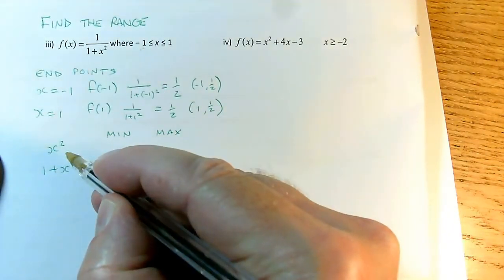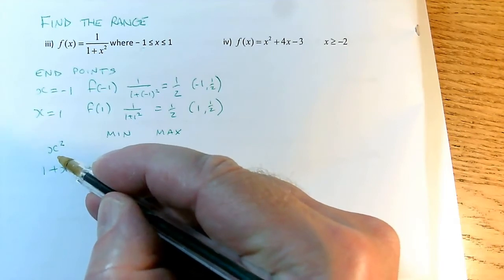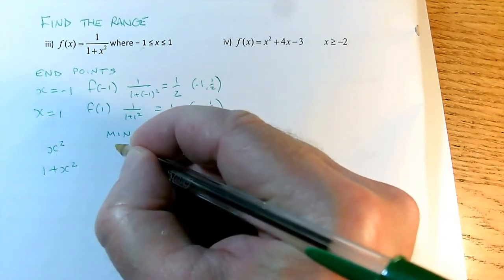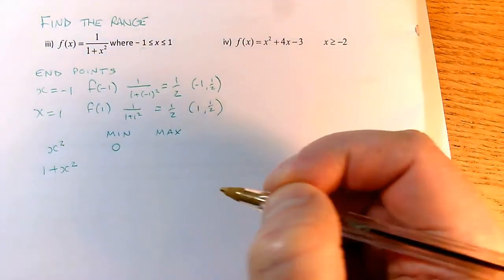So the minimum value and the maximum value of each of these things. Well, the minimum value of x squared, it does have one because we can't get negative answers out, so we know the minimum value for x squared is always 0, which happens when x is 0.